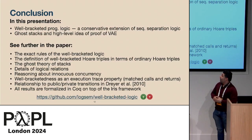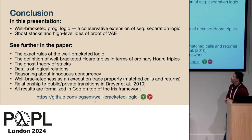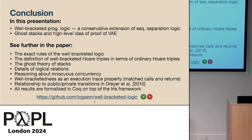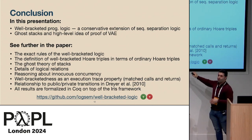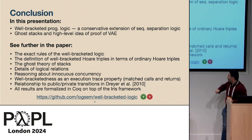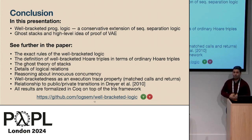To conclude, I have shown you a well-bracketed program logic to reason about well-bracketedness and the idea of ghost stacks and how we use them. There is quite a bit more in the paper. Everything presented — all the examples, all the logical relations — is formalized in Coq on top of the Iris program logic, which is also available.